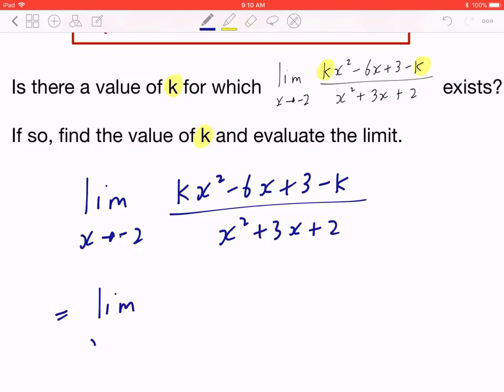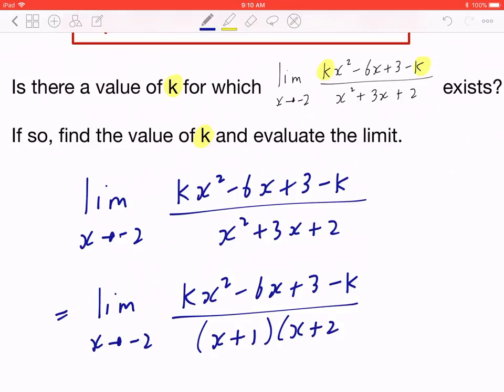So you copy down the limit as x is approaching -2. You copy the numerator, kx² - 6x + 3 - k all over. And if you go back to the basic concept of simple factoring, x² + 3x + 2 is factored as (x + 1)(x + 2).